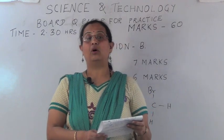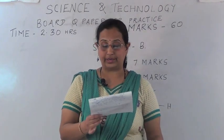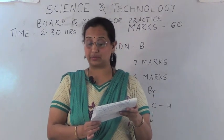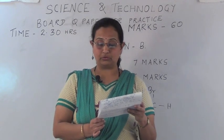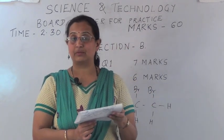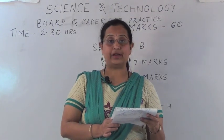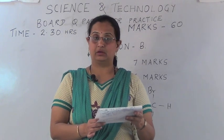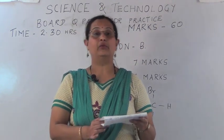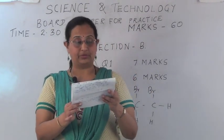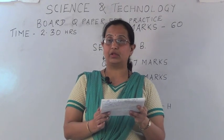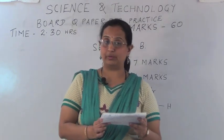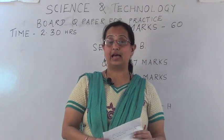The next question of question 2: distinguish between diamond and graphite. Make two columns and write the answer. First point — diamond is a hard, transparent, shining substance; graphite is a soft, opaque, grayish-black substance. Second point — diamond has a three-dimensional tetrahedral structure; graphite has a hexagonal planar structure. Third point — diamond is a non-conductor of electricity; graphite is a good conductor of electricity. Fourth point — diamond is a precious substance used in jewelry; graphite is used to make lead pencils and lubricants.